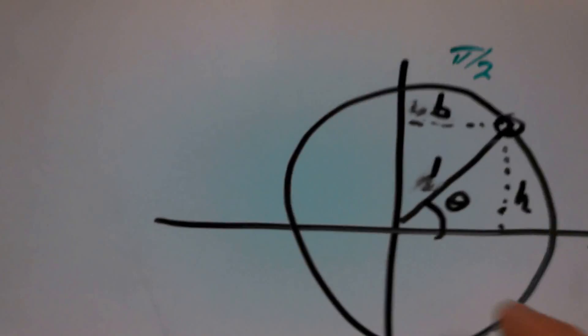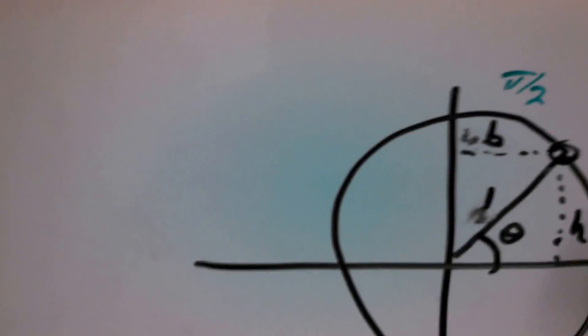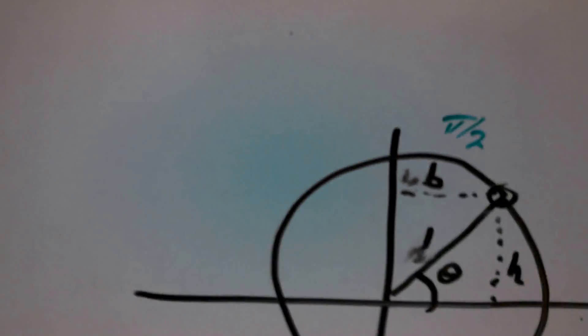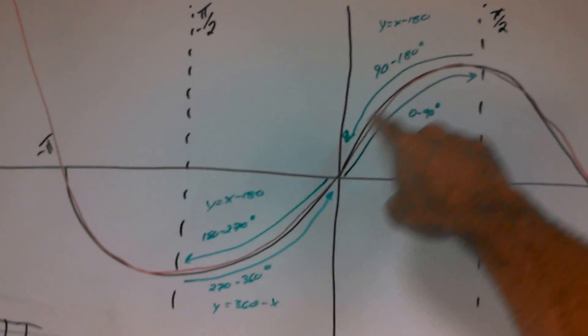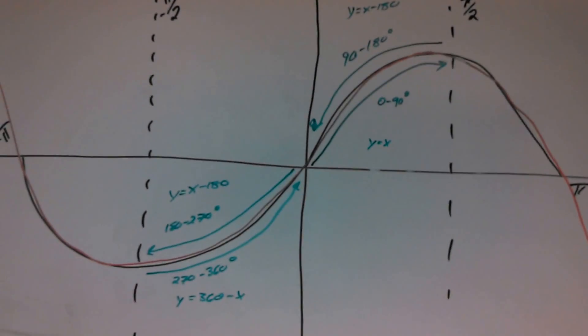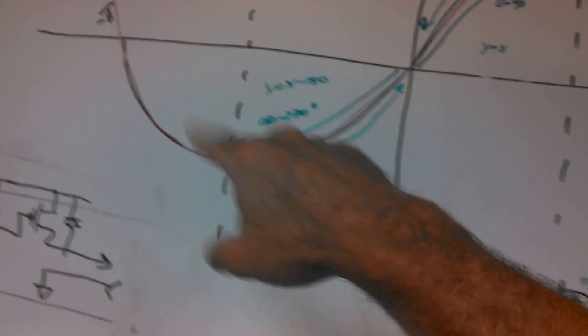You can choose your symmetry, left to right, top to bottom, even quadrant 3 to quadrant 1, or is that 4? I don't remember. Anyway, we see the same symmetry here. The black line here is the, let's say, a perfect sine wave, even though my drawing is nowhere near perfect.